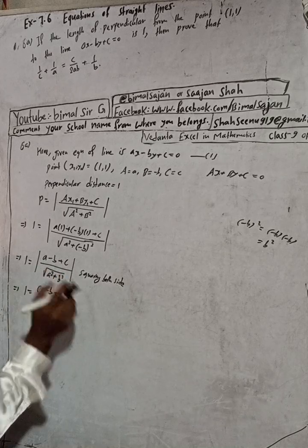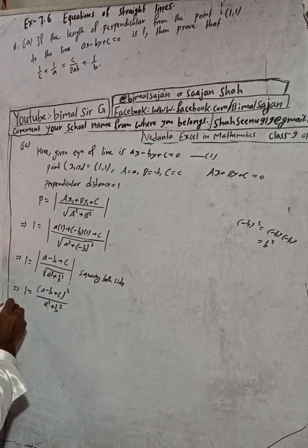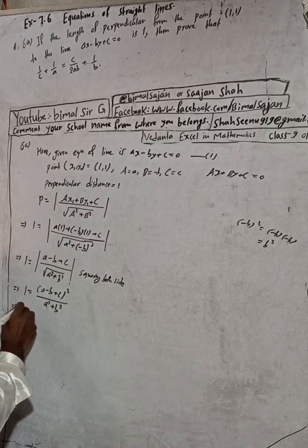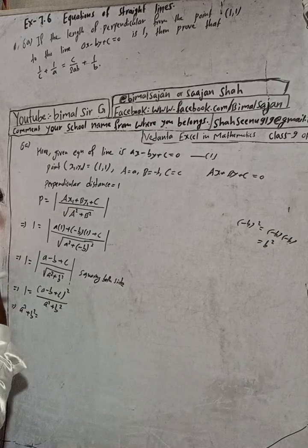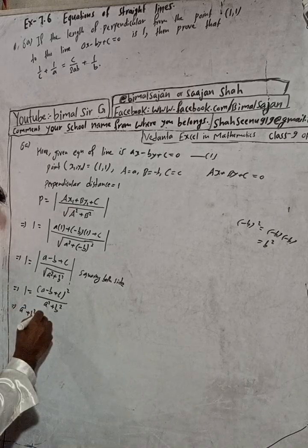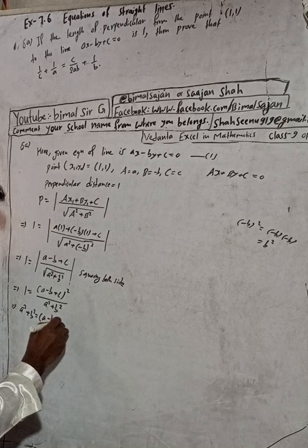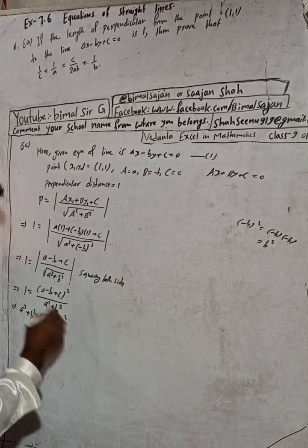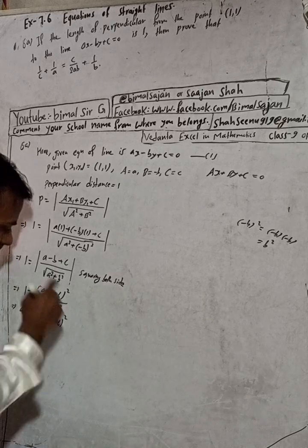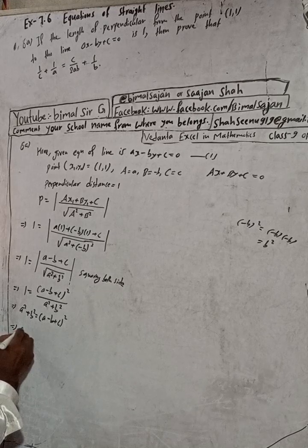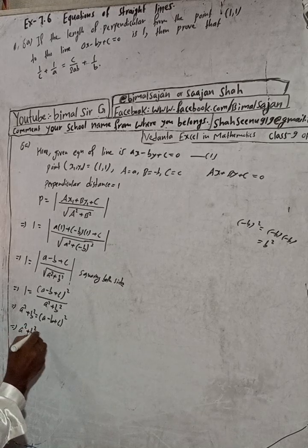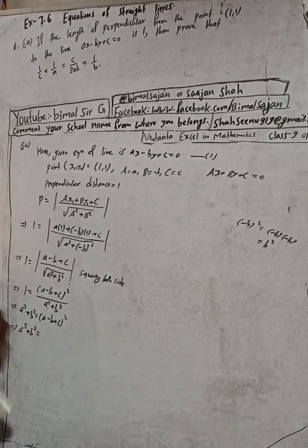Squaring both sides cancels the square root. So now we can write: a² plus b² equals (a minus b plus c) whole squared.